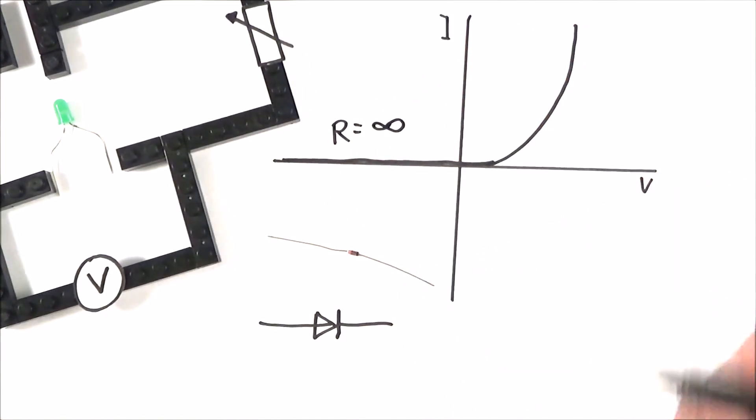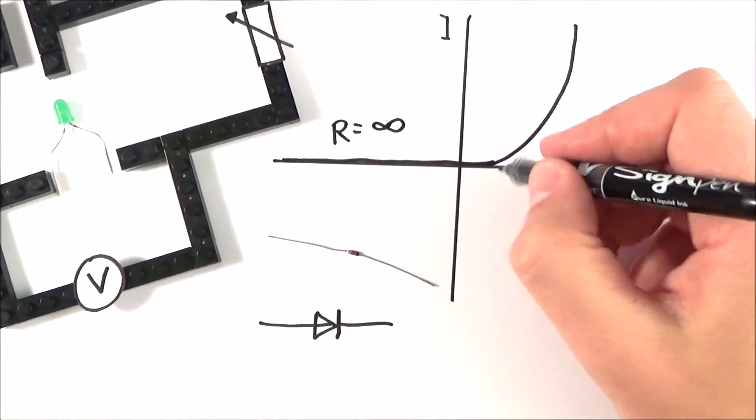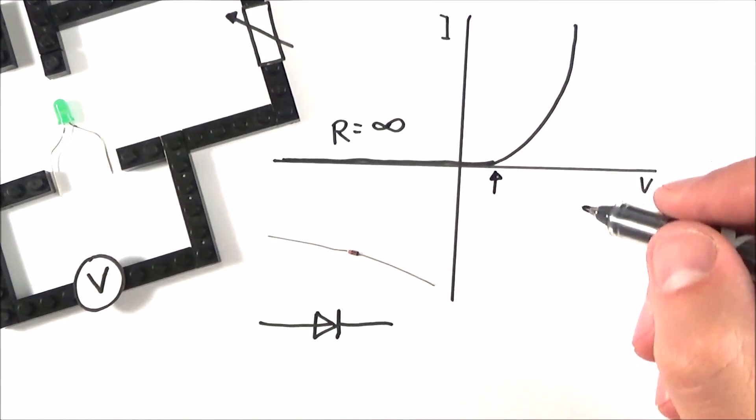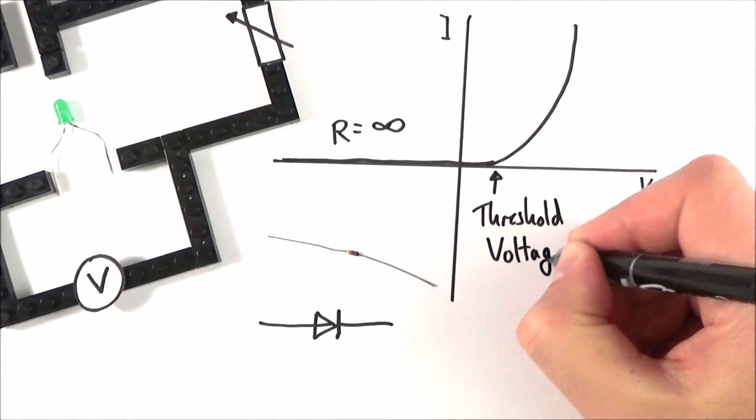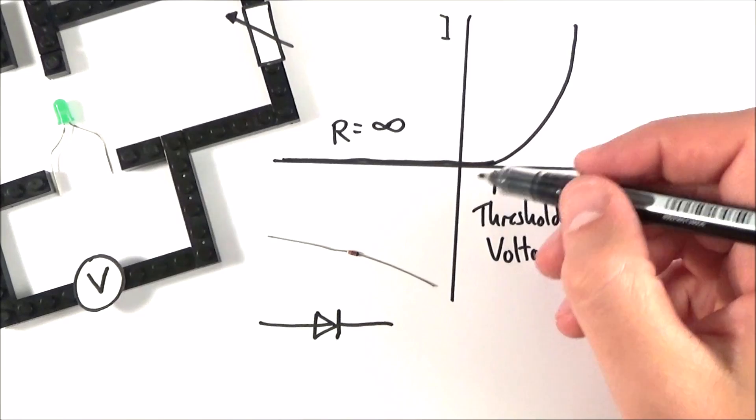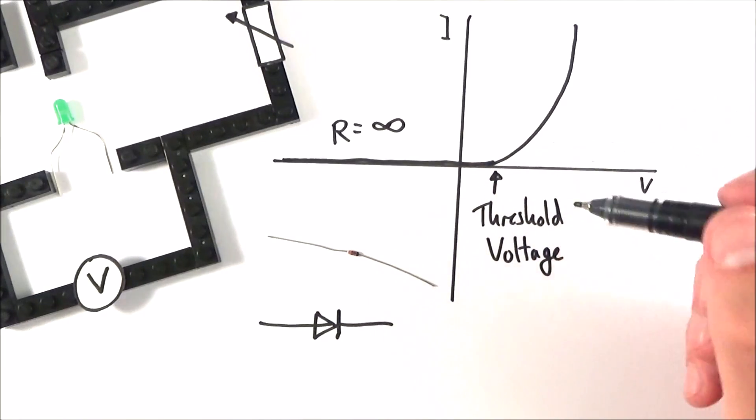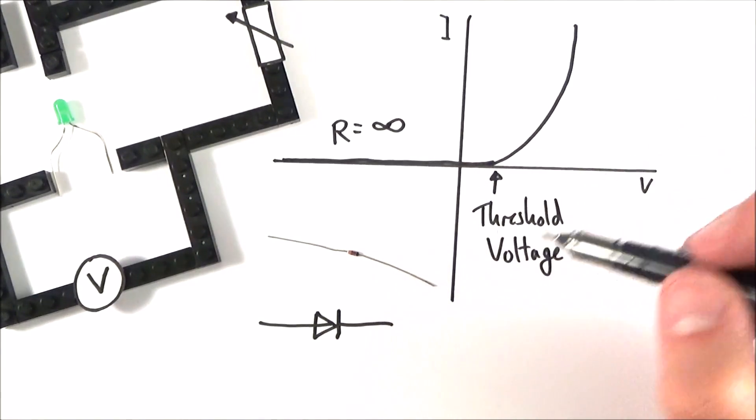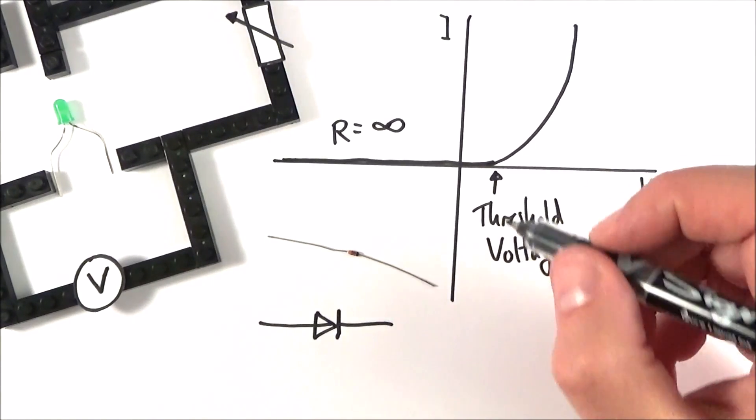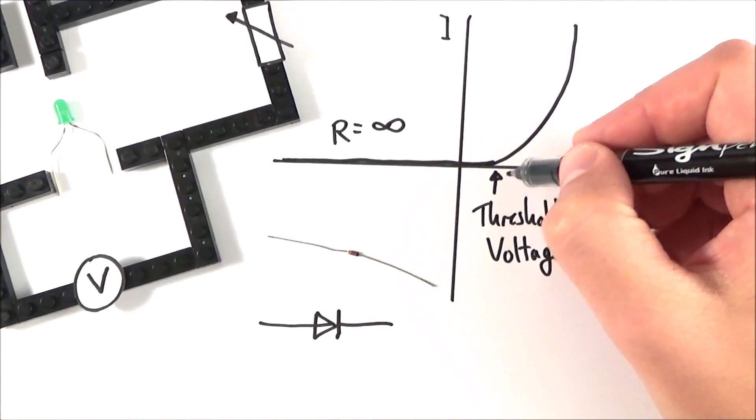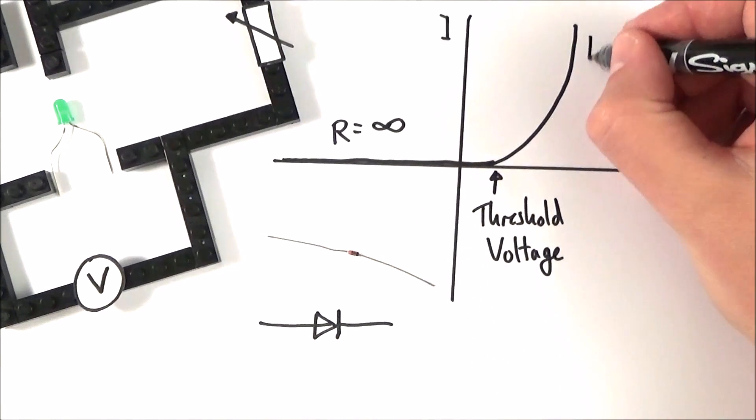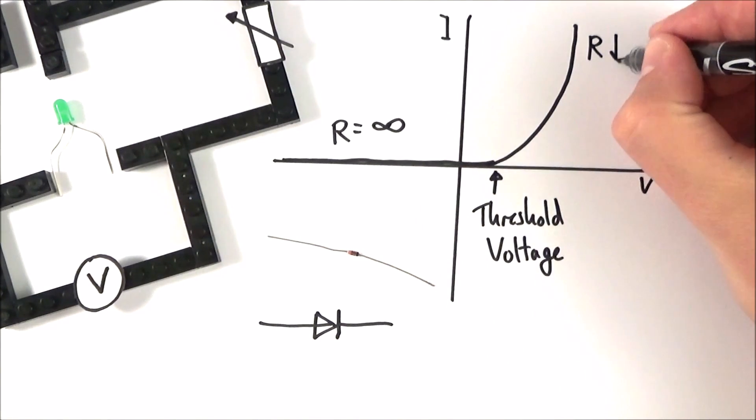Over here we have something called the threshold voltage, and below this value we have no current flowing at all. This is going to be really important later when you come to do a practical looking at the value of Planck's constant.